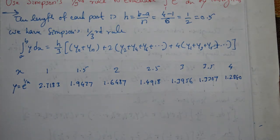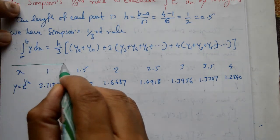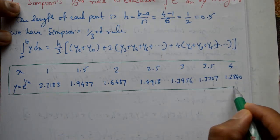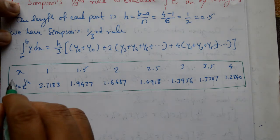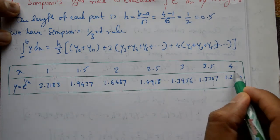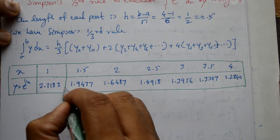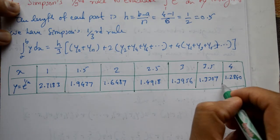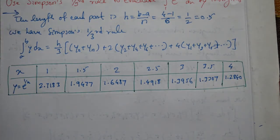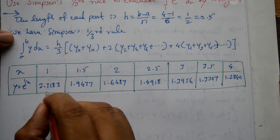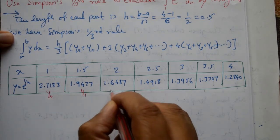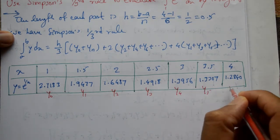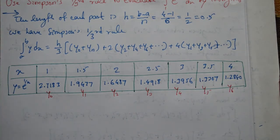Now, so me column me lehenge, table me lehenge isko. So aya ga, first value, y1 hai, y2, y3, y4, y5 and y6, last value y6.